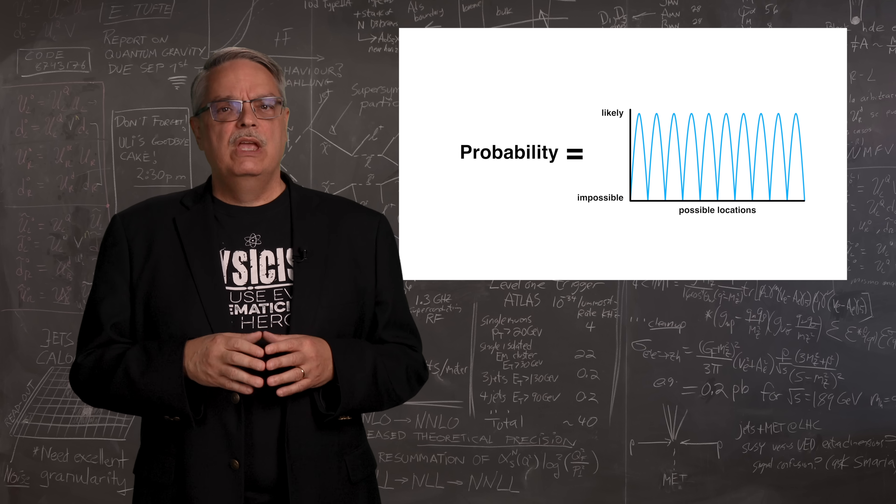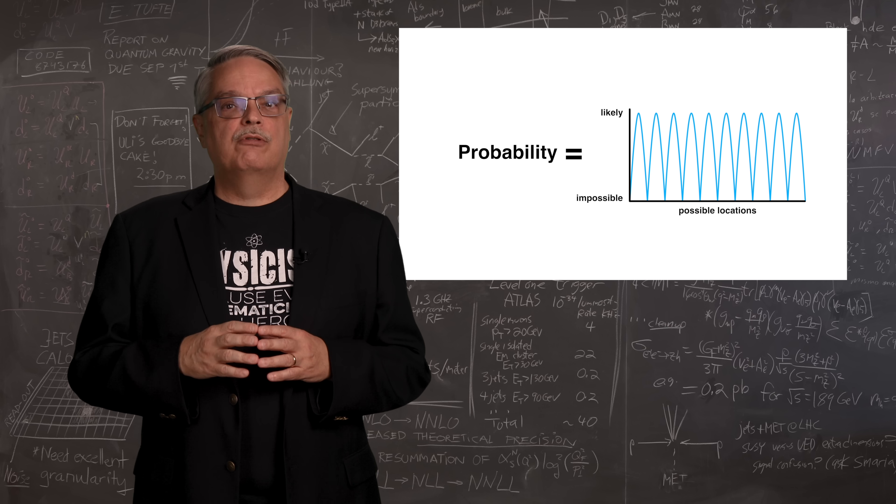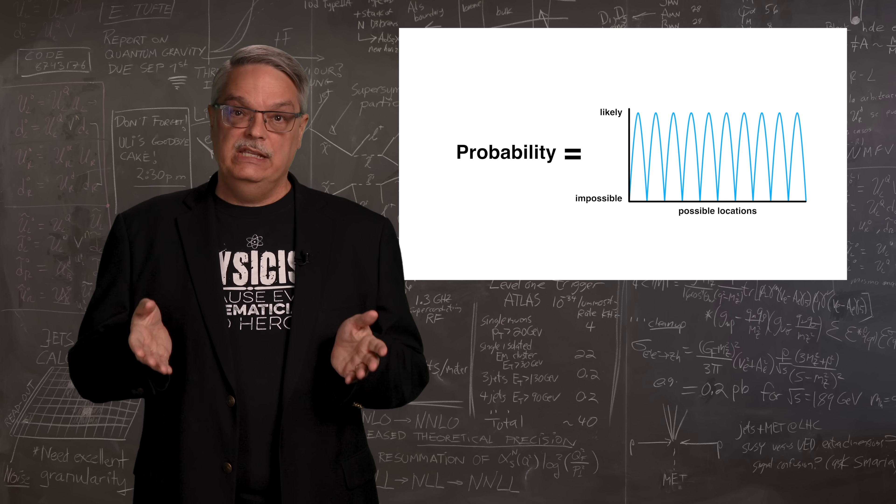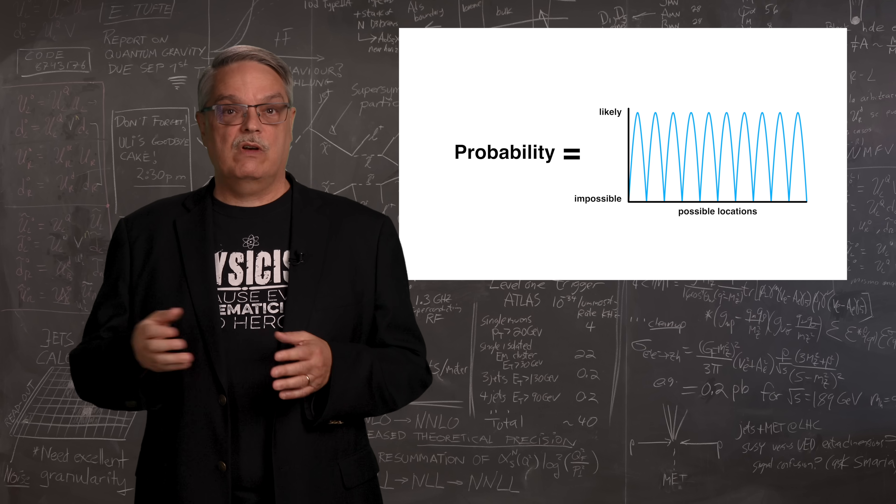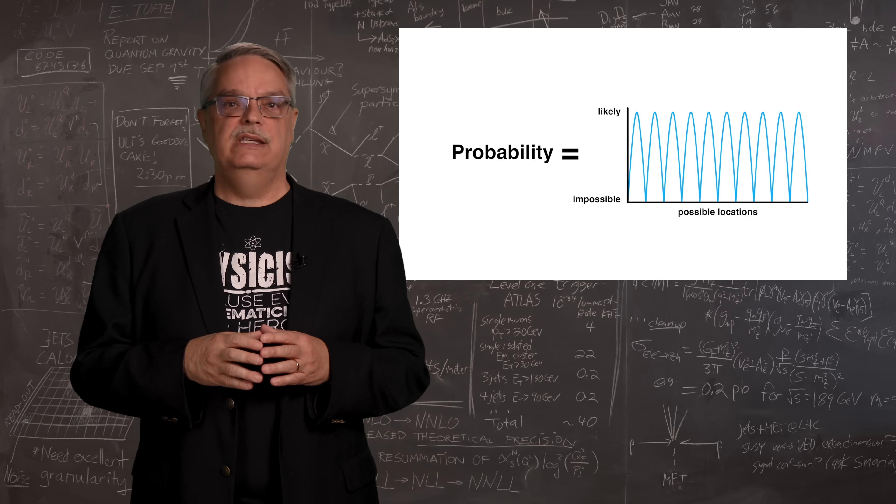So that's not too bad. The wave function squared gives you the probability of where you can find the particle the wave function is describing. That's the first big quantum idea.